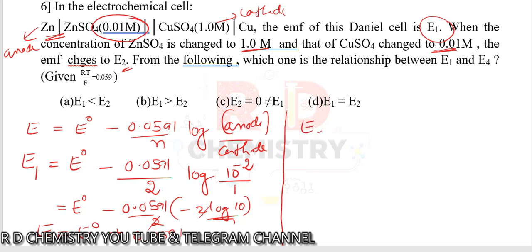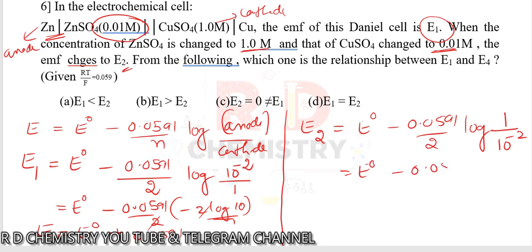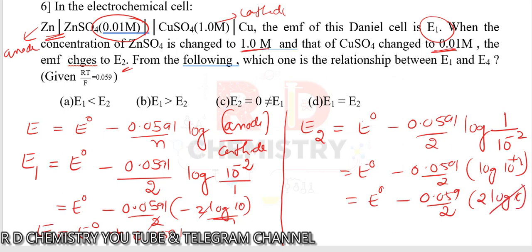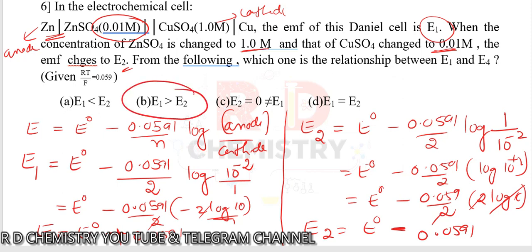For E2, with ZnSO4 at 1 M and CuSO4 at 0.01 M: E2 equals E-naught minus (0.0591/2) times log(1 / 10^-2), which simplifies to E2 equals E-naught minus 0.0591. Since E1 adds 0.0591 and E2 subtracts it, E1 is larger than E2. The answer is option B.